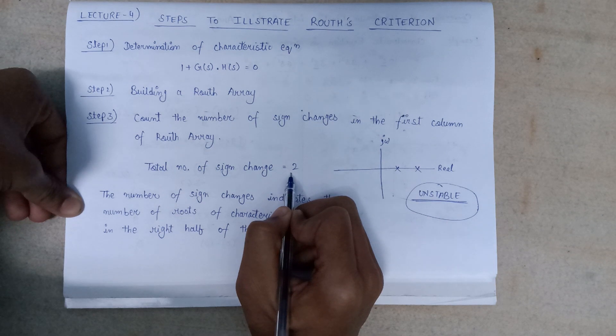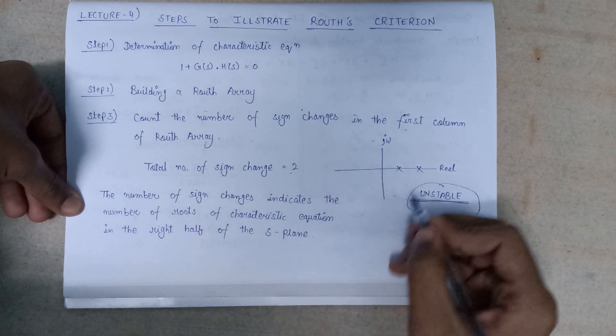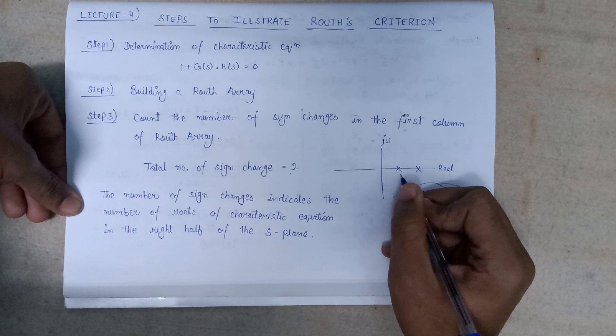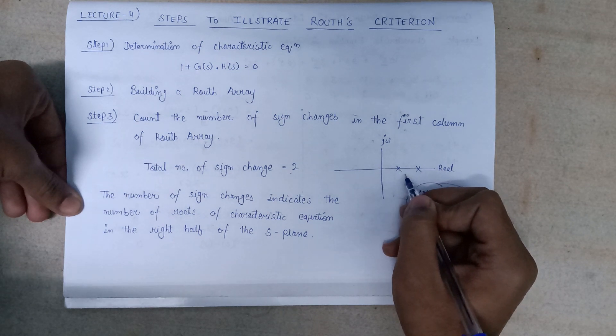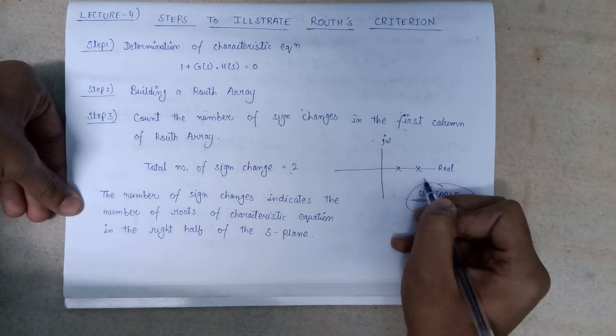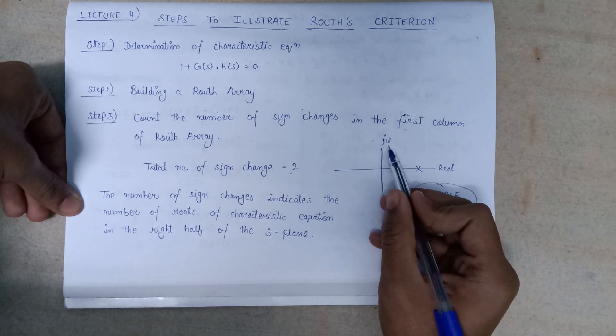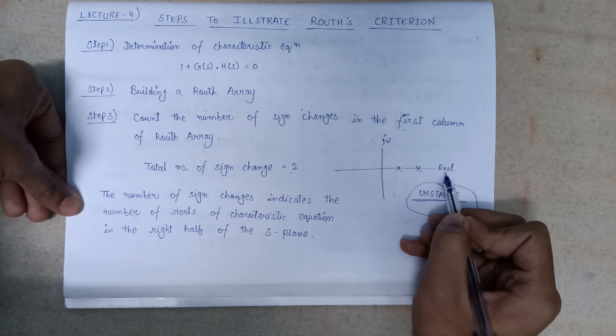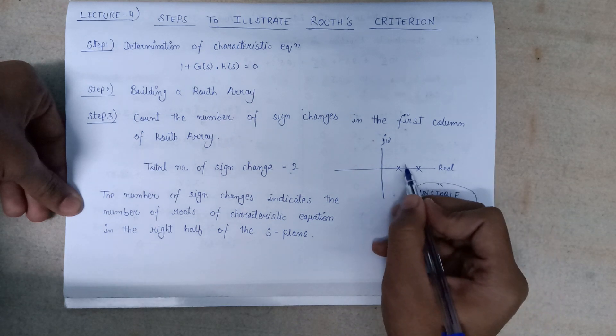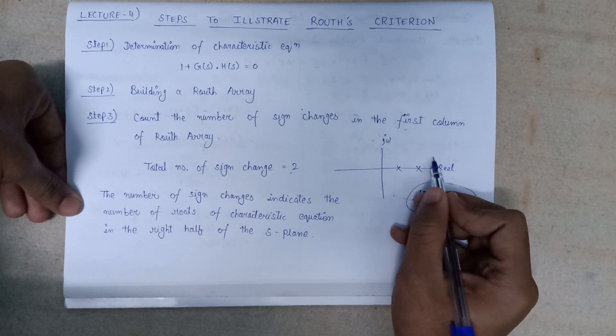Thus we can say that the total number of sign changes is equal to 2. So what does it mean? It means that the number of roots in the right-hand side of S-plane is 2. This is the j-omega axis, this is the real axis of the S-plane. So the two roots lie in the right-hand side of the S-plane.